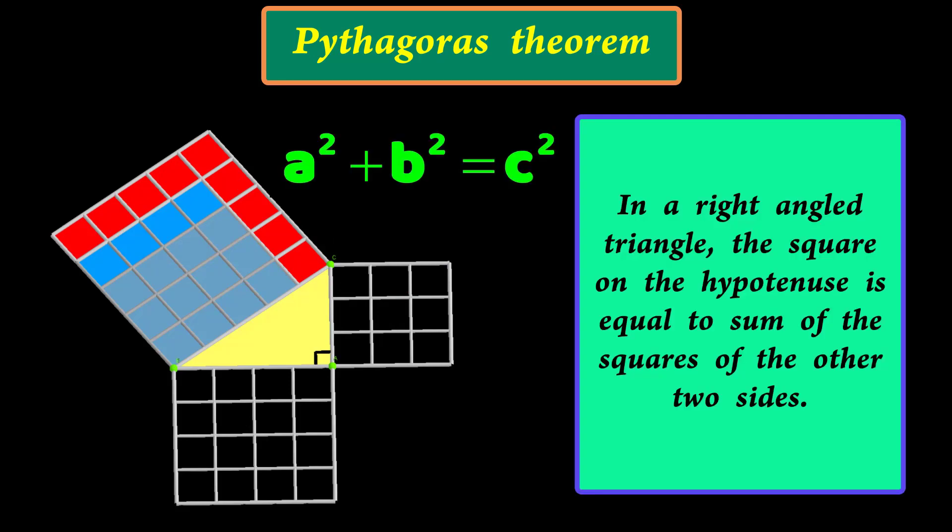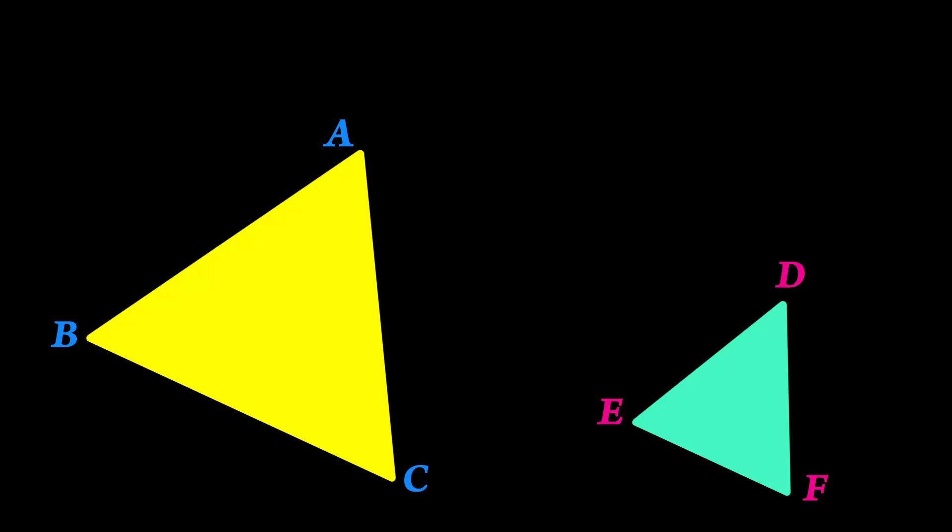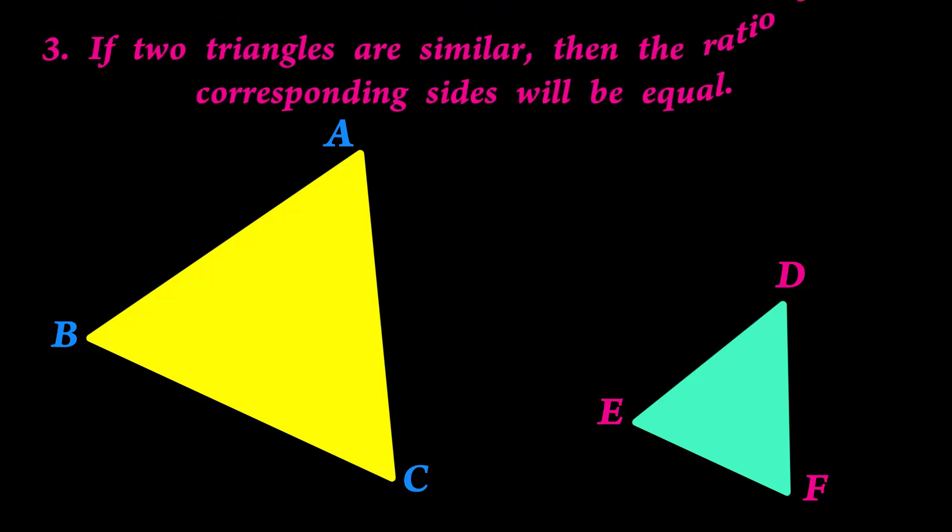This is called Pythagoras theorem. Before moving on to the actual proof, let's recall one important property of similar triangles because we are going to use that in our proof. When two triangles are similar, then the ratio of the corresponding sides will be equal.